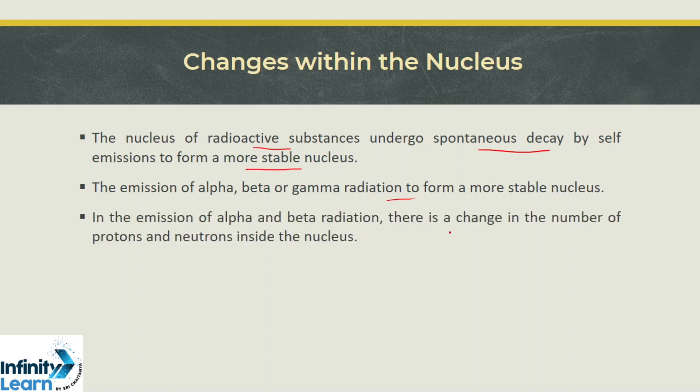In the emission of alpha and beta particles, there is a change in the number of protons and neutrons inside the nucleus. Whereas in the emission of gamma radiation, there is only a change in the energy of the nucleus, as gamma radiation is an electromagnetic wave which does not have any mass.